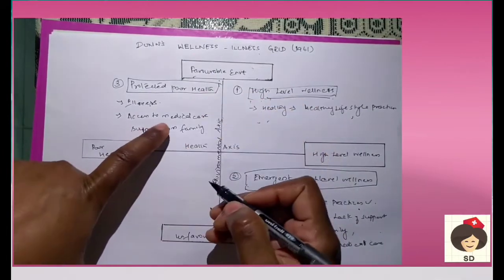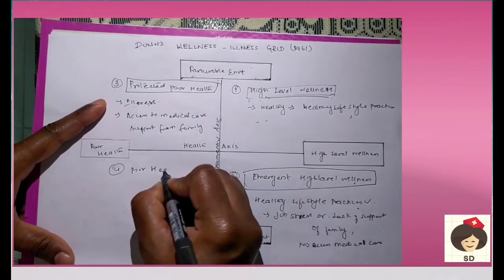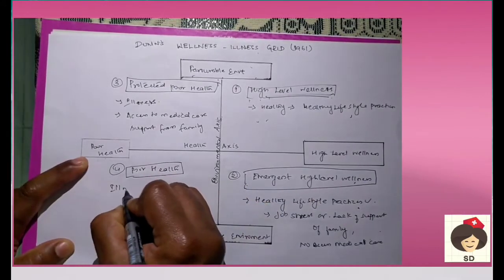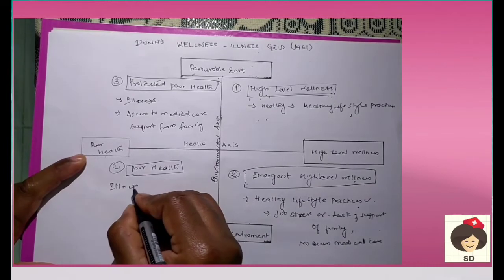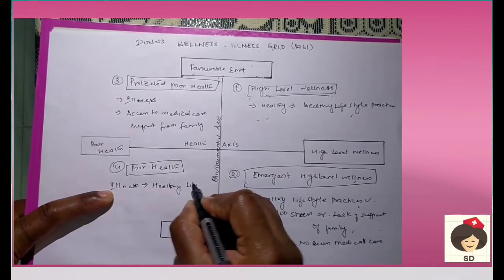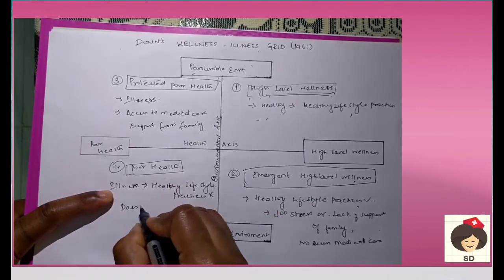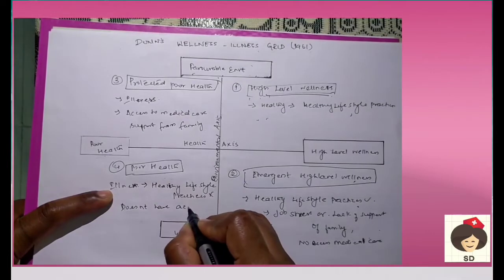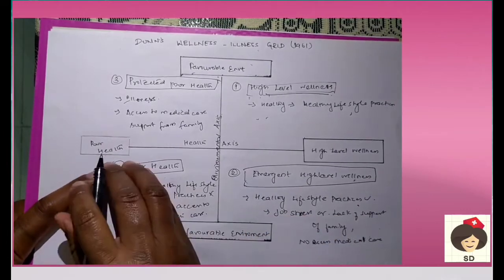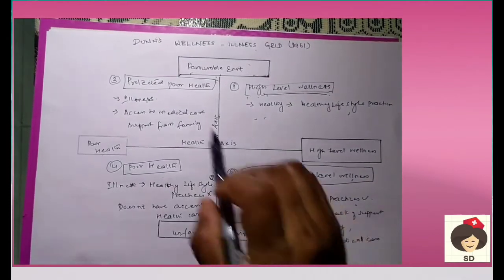He can get medical treatment and then improve his health. Finally, the last quadrant is poor health. In poor health, the person has illness and is also in an unfavorable environment — he doesn't follow any healthy lifestyle practices and doesn't have any access to health care. These are the four quadrants given by Dunn's Wellness-Illness Grid.